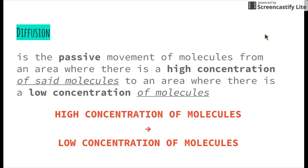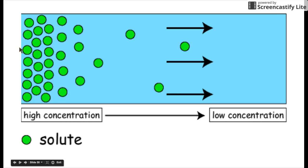When we have an area where there's lots of particles — here the little green circles represent our solute, which is dissolved in our solvent — we have lots of solute particles at one end and none at the other. There's a high concentration at this end of our vessel and a low concentration at the other end. These solute particles will then move from the area where there's lots to the area where there's not many, until there is an equal number of solute particles throughout the whole vessel.